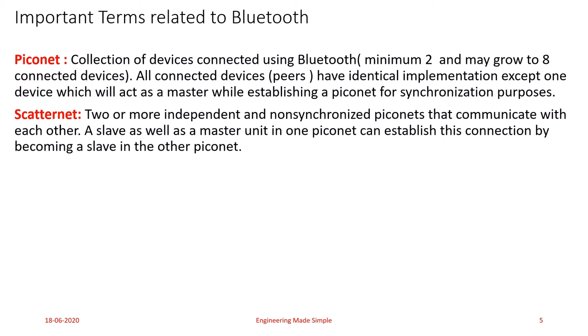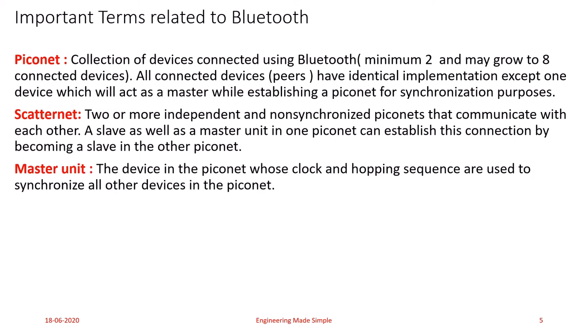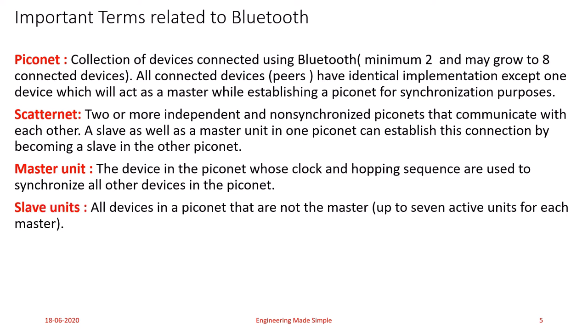A master unit is the device in the piconet whose clock and hopping sequence are used to synchronize all other devices in the piconet. Slave units are all devices in the piconet that are not master — up to seven active units for each master. Devices in the piconet which are not masters are always known as slave units.